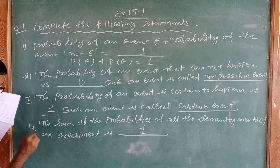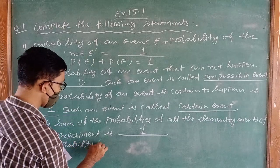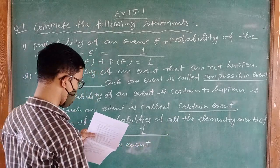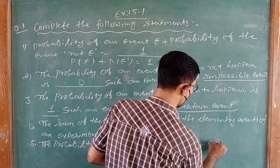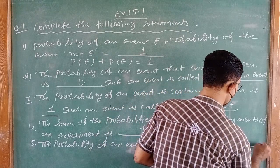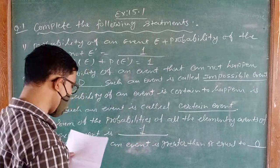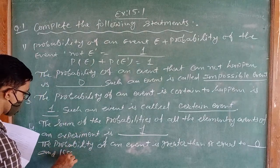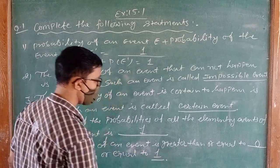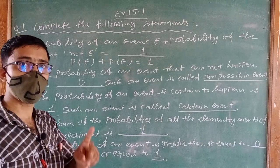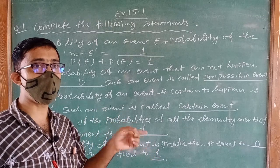Question number 5: The probability of an event is greater than or equal to zero, and less than or equal to one. So the value of probability always lies between 0 and 1, inclusive. This completes our first question — filling in the blanks.